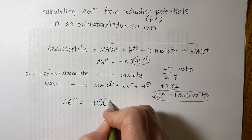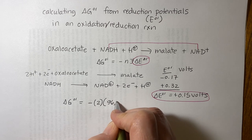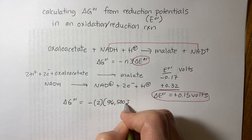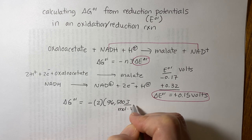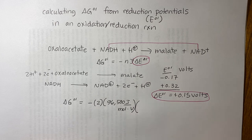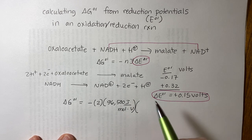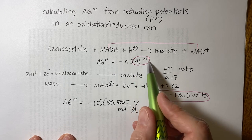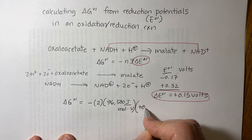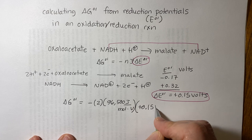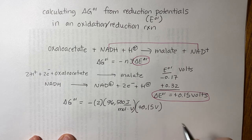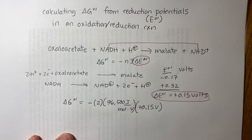And then we times it by the Faraday constant, which is 96,500 joules per mole dot volts. And that's a constant which will be provided. And then we put in our delta E, which we just figured out is 0.15 volts.